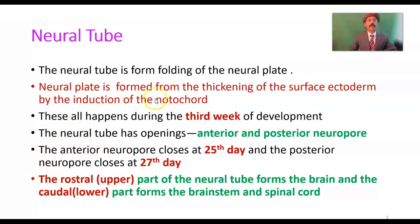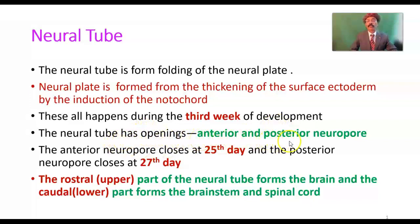The neural tube is formed from folding of the neural plate. The neural plate is formed from the thickening of the surface ectoderm by the induction of the notochord. This all happens during the third week of development. The neural tube has two openings: one is the anterior neuropore and another is the posterior neuropore. The anterior neuropore closes around the 25th day and the posterior neuropore closes around the 27th day. The rostral or upper part of the neural tube forms the brain, and the caudal or lower part forms the brain stem and spinal cord.